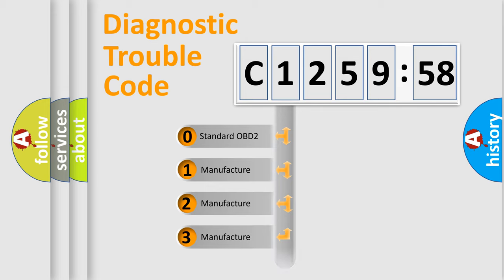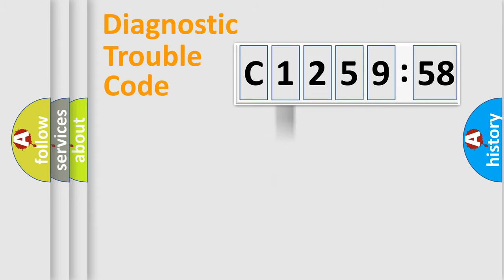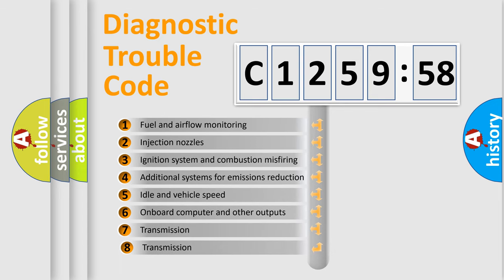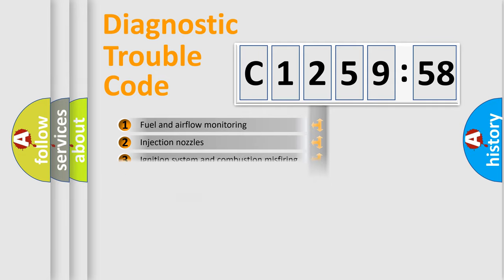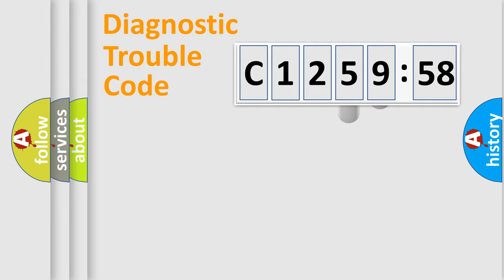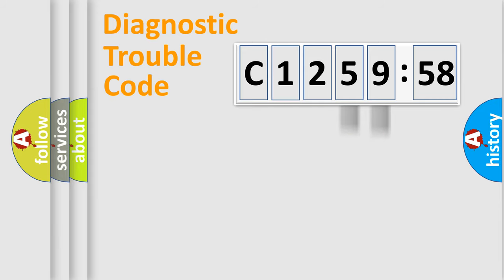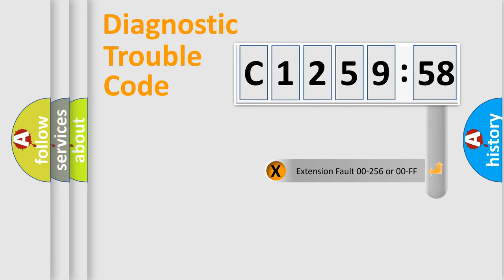If the second character is expressed as zero, it is a standardized error. In the case of numbers 1, 2, or 3, it is a manufacturer-specific expression of the car-specific error. The third character specifies a subset of errors. This distribution is valid only for the standardized DTC code, and only the last two characters define the specific fault of the group.